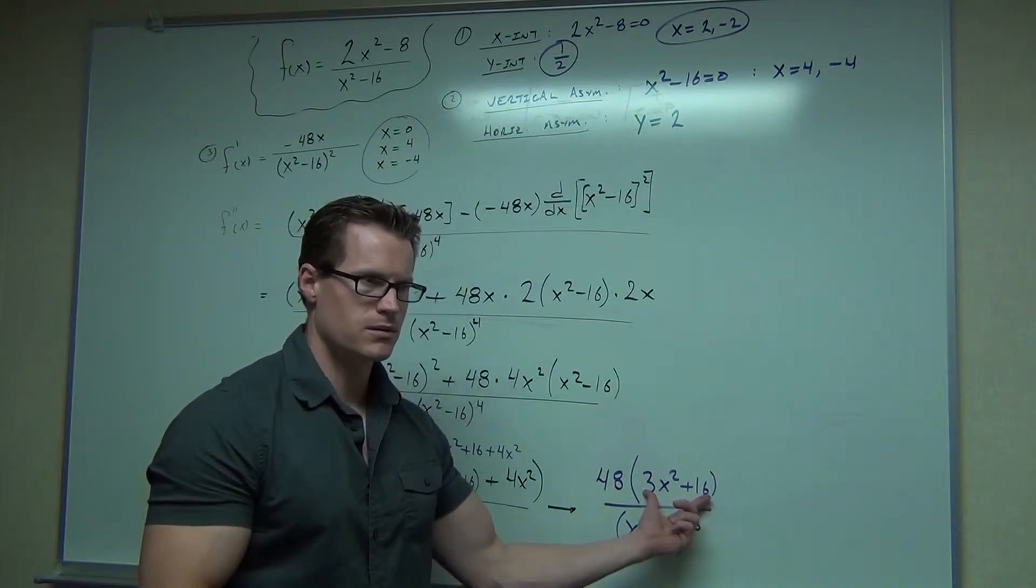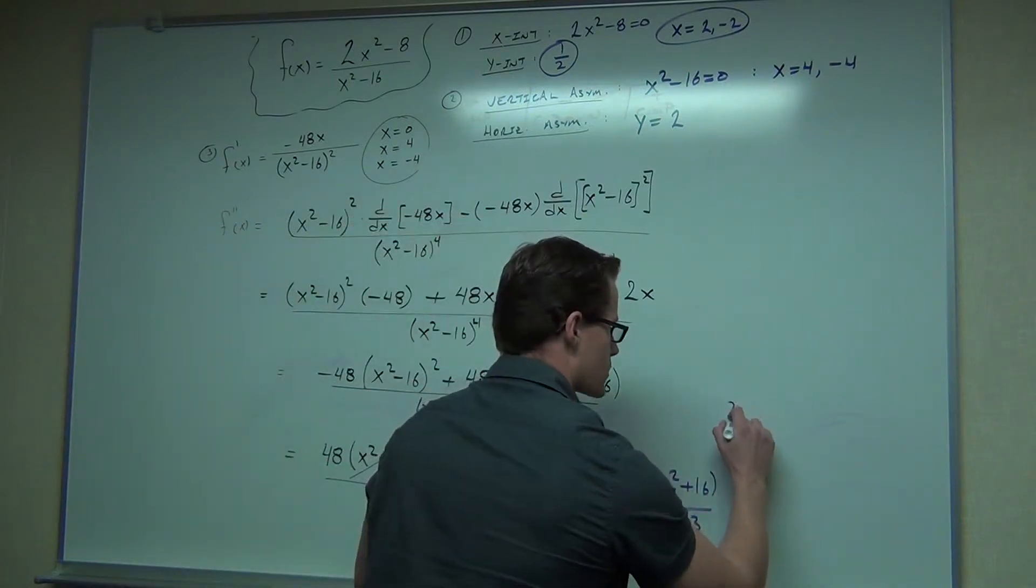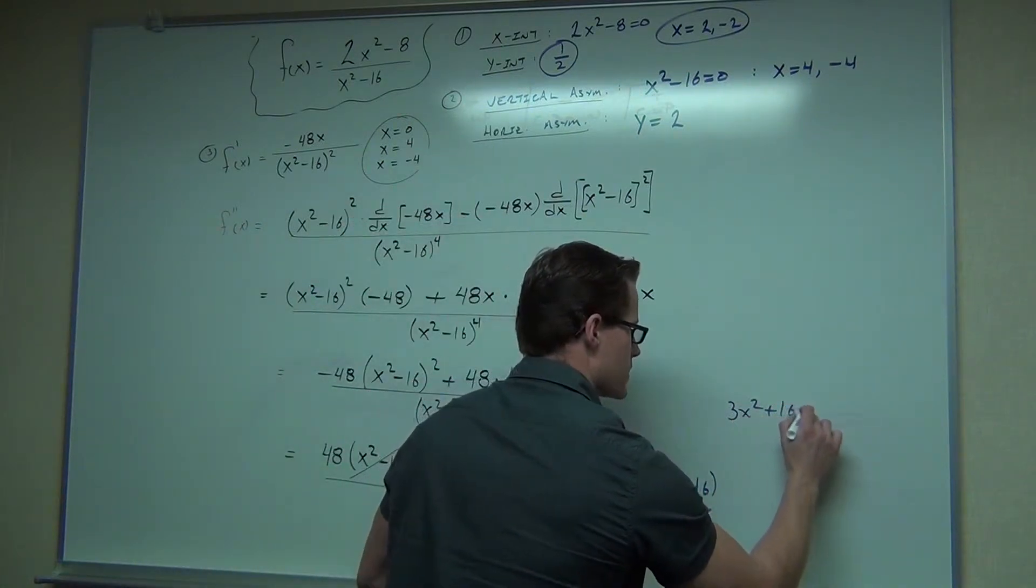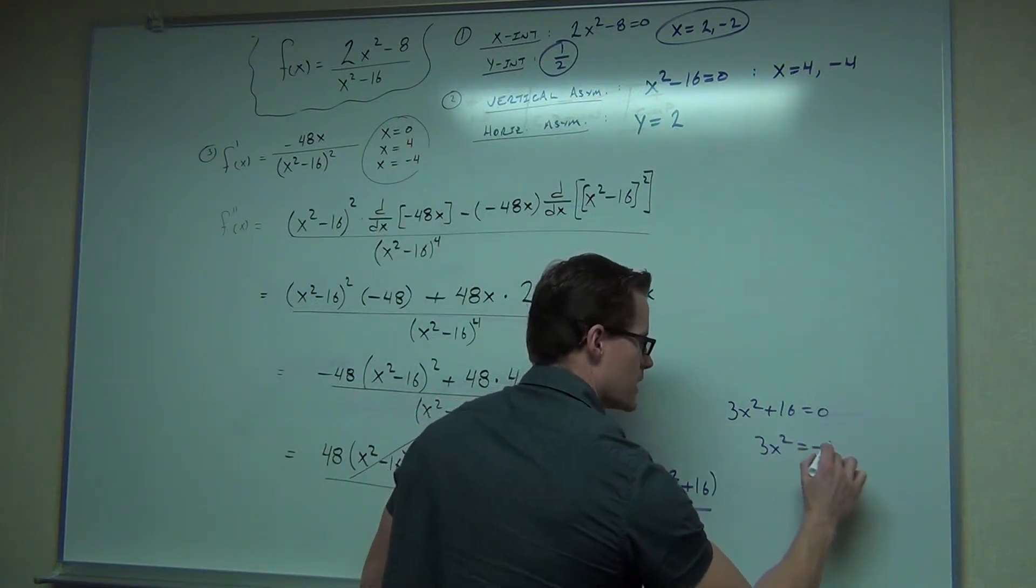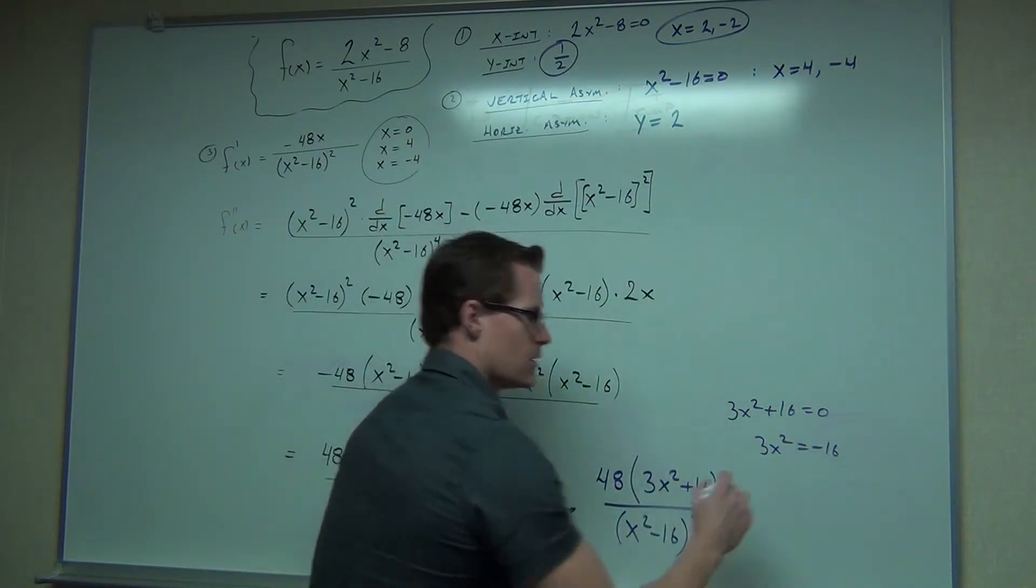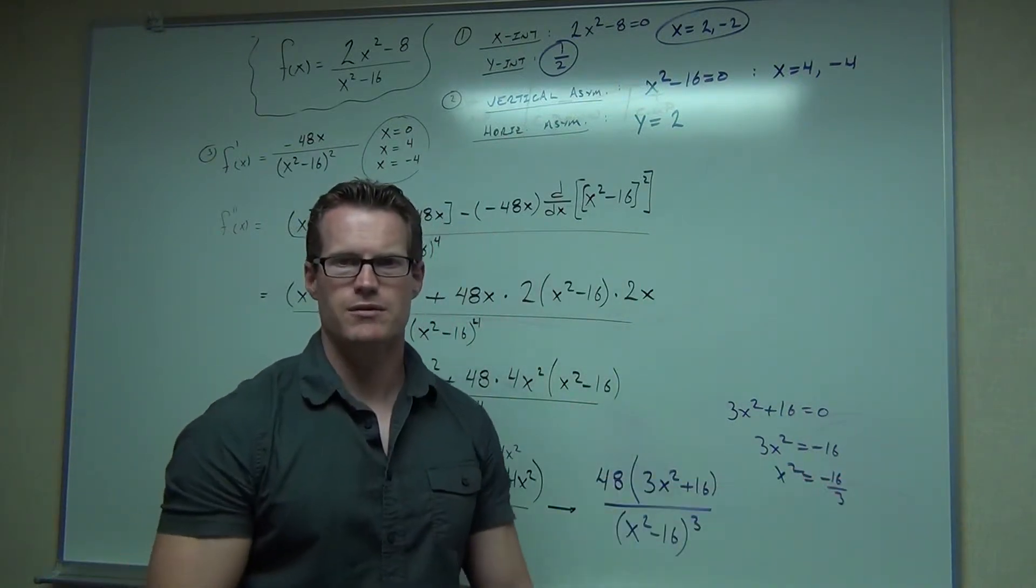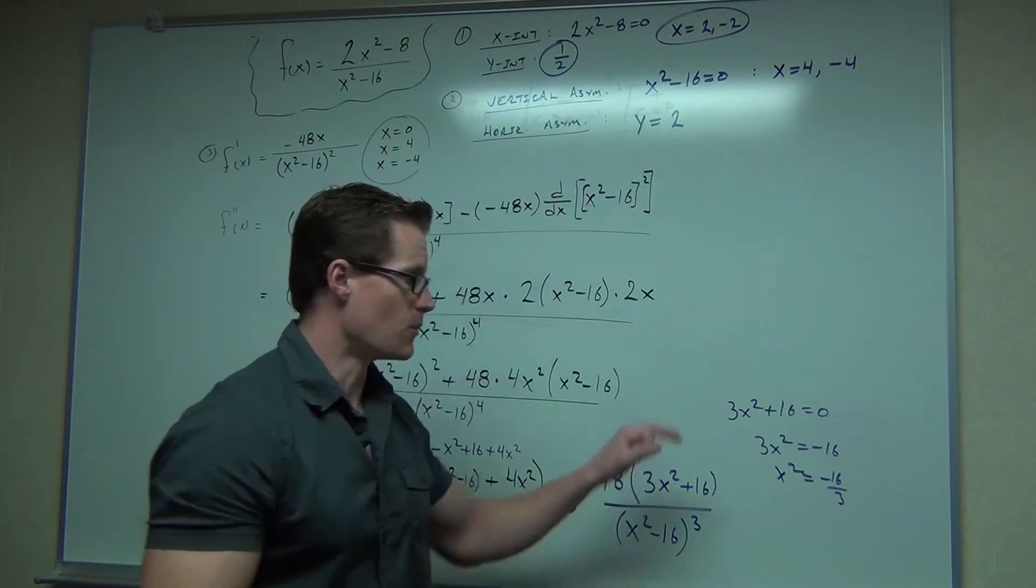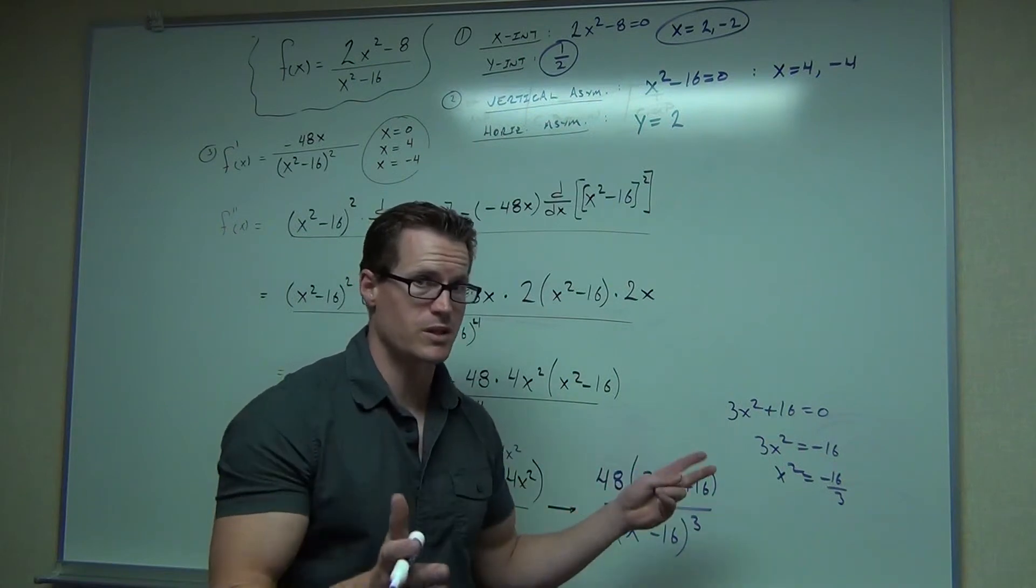Is that ever going to work for you? 3x squared plus 16 equals zero. Well, 3x squared equals negative 16. x squared equals negative 16 over 3. Can you have x squared equals negative? The answer is no, not in the real number system. So here, that's not going to give us any possible inflection points. So the numerator pretty much doesn't give us anything.